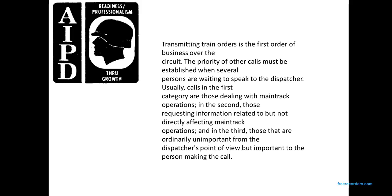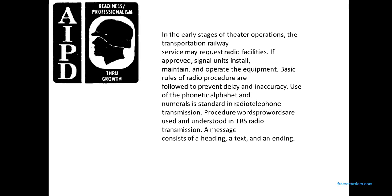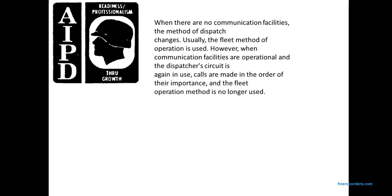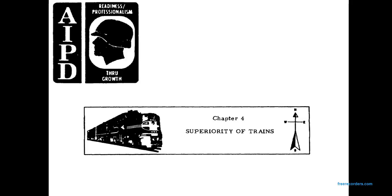Transmitting train orders over the circuit carries the highest priority. Priority must be established when several persons are waiting to speak to the dispatcher. The first category deals with main track operation; the second involves information related to but not directly in main track operation; the third involves matters ordinarily unimportant from the dispatcher's viewpoint. In early stages of theater operation, Transportation Railway Service may request radio facilities. Basic rules prevent delay and inaccuracy; phonetic alphabet, numerical, and standard pro-words are used in TRS radio transmission. A message consists of heading, text, and ending. When no communication facilities exist, the fleet method of dispatching is used. When communications are restored, the fleet operation method is no longer needed. End of Chapter 3. Chapter 4: Superiority of Trains.